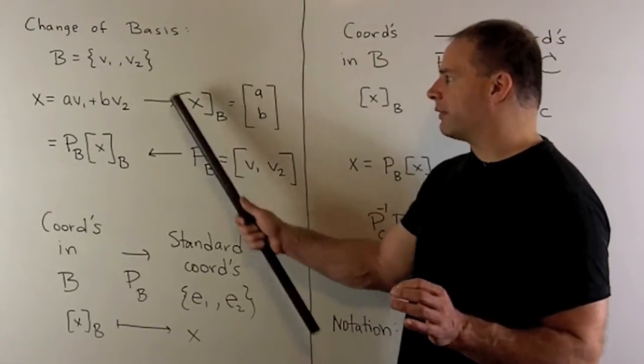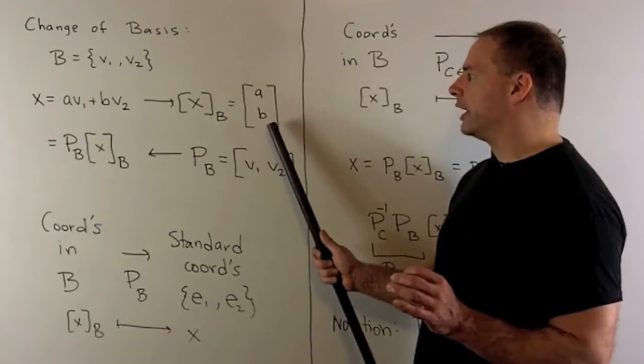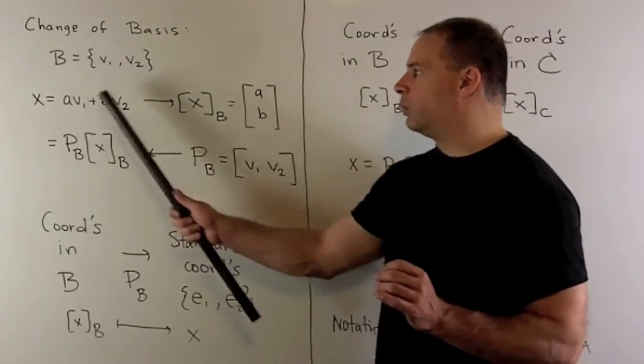Now, if I want to go in the other direction, if I have a coordinate vector, the coefficients are already here, so I just match them with V1 and V2.